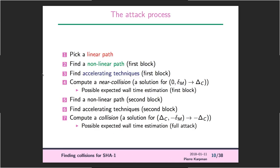What do you need to do if you want to compute your own SHA-1 collision? First, you pick a linear path — that's the L thing, which comes first in determining your attack parameters. Then you compute the nonlinear path corresponding to it for the first block. Once you have that, you compute your accelerating techniques to make the attack as efficient as possible. When you have everything, you implement the attack and can estimate quite precisely how long it will take to compute a first-block collision.